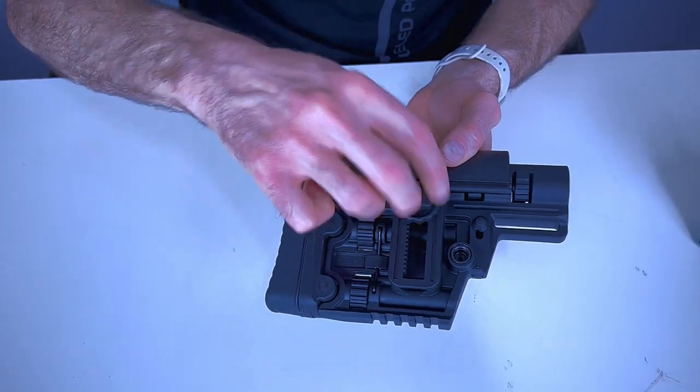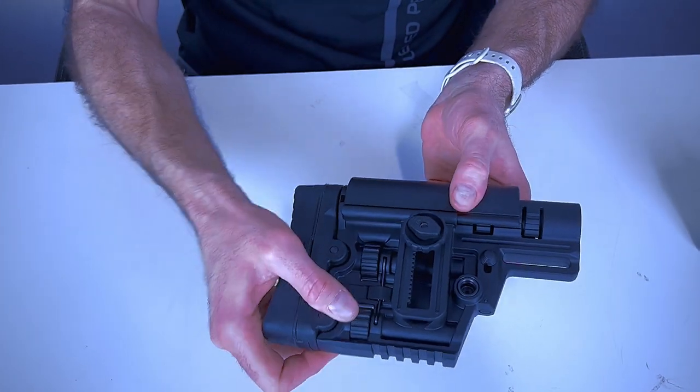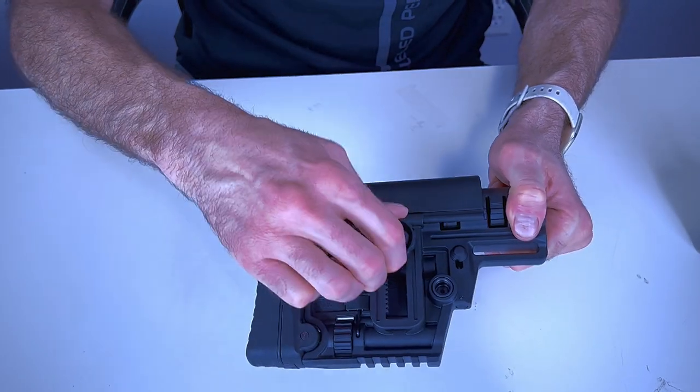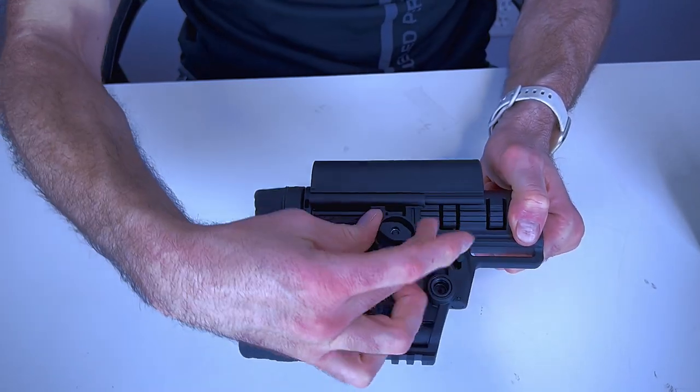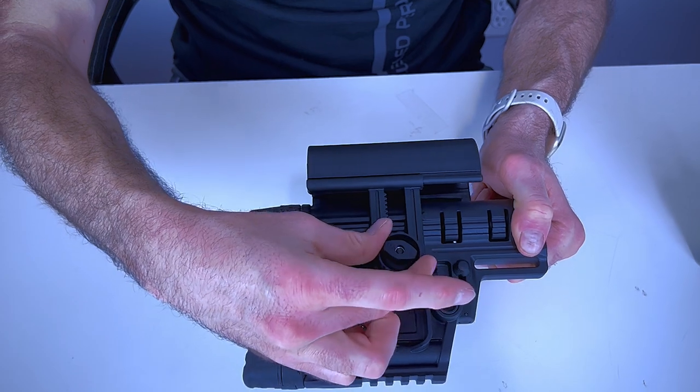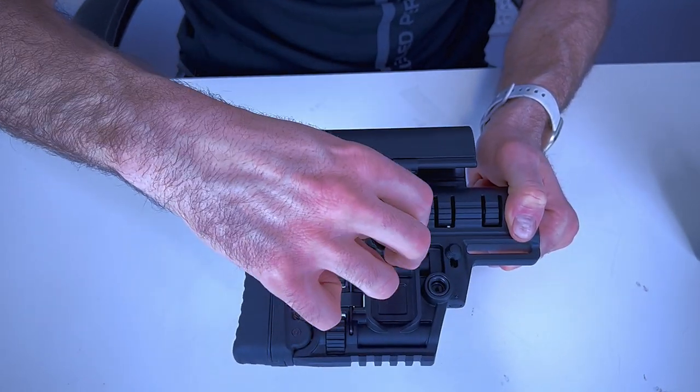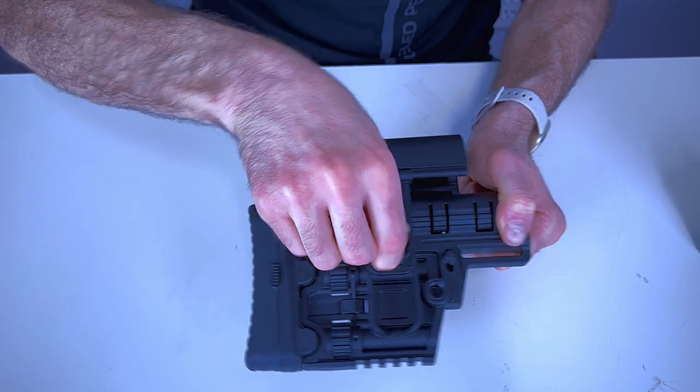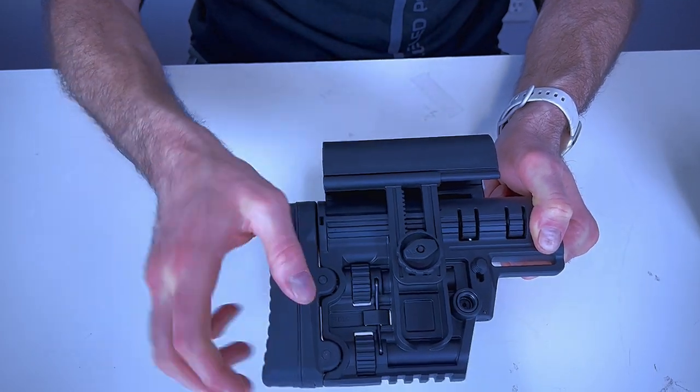We also lock the cheek riser into place so you can move it by rotating this wheel and then once into place screw this down and that will lock your cheek riser into place.